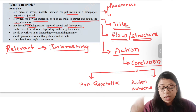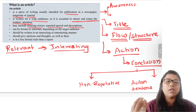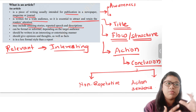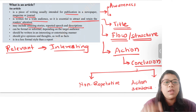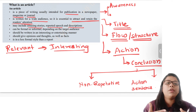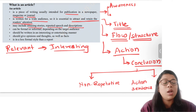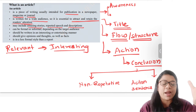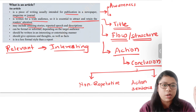An article can be formal or informal depending on the target audience. If you're writing for teenagers and keep it extremely formal without using any Gen Z language, it becomes boring even if the content is interesting — because it's not relevant to that audience. Similarly, if you're writing for corporate professionals, they won't appreciate an extremely casual article. Understanding your audience's mindset is crucial.